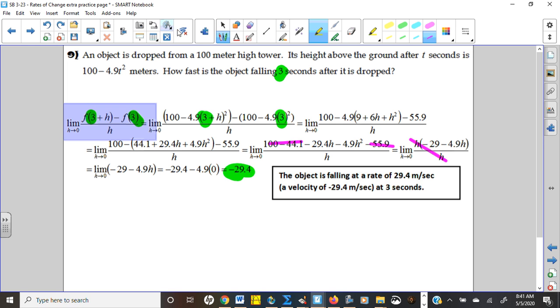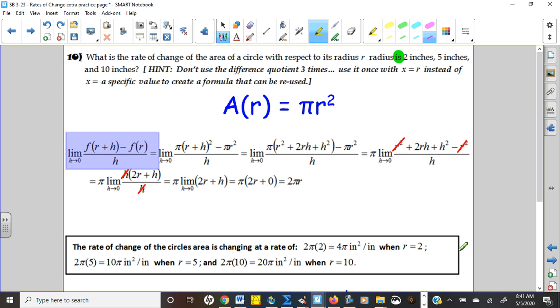And then finally, number 10 was one of those rate of change problems. And you could have done this three times for the three different radii, two, five, and ten. But my hint was, hey, just do it one time. Just use an R for radius. It's going to make the algebra a little funkier the first time through. But then you can very quickly get the three answers. So hopefully you did it that way.